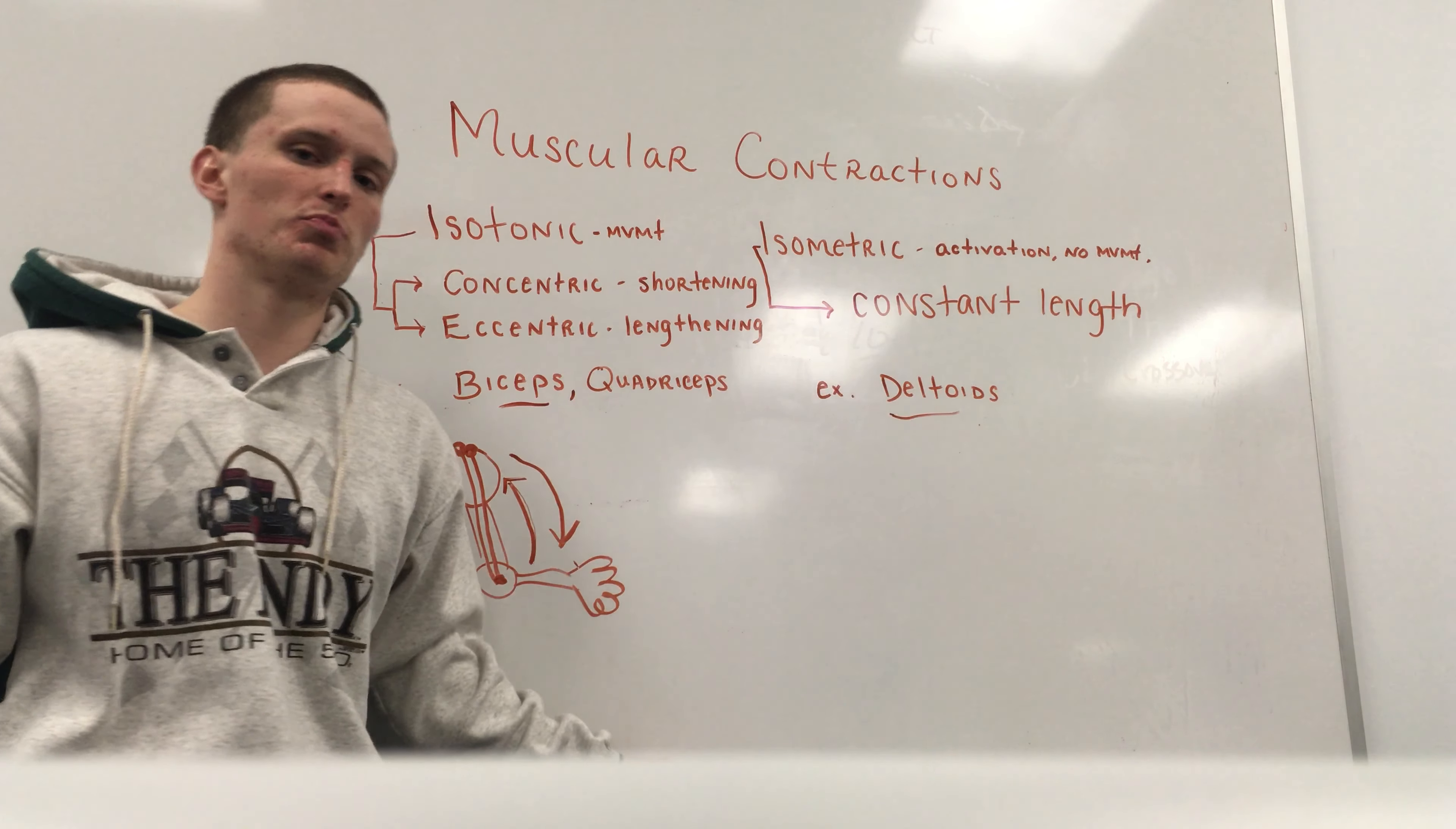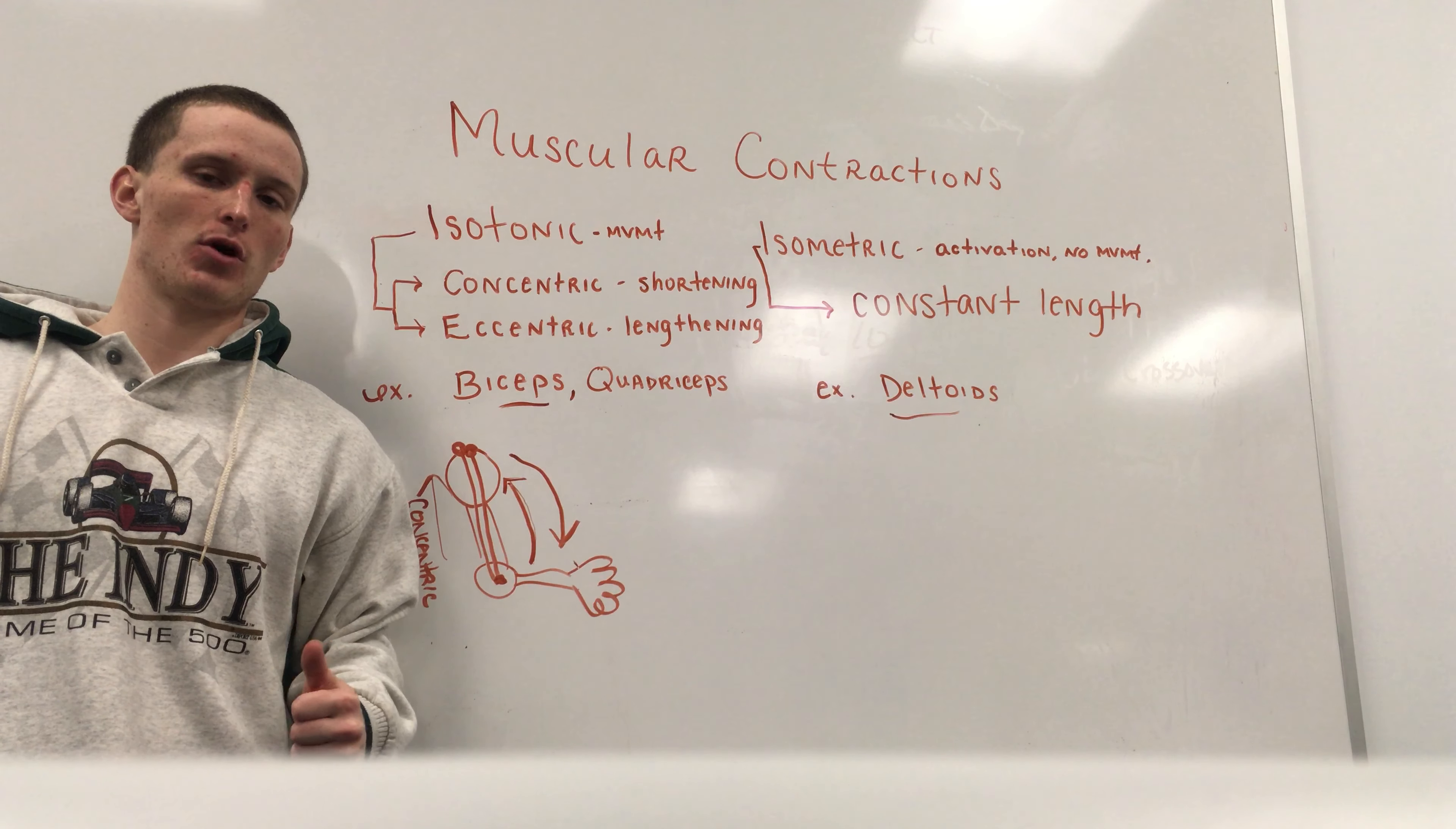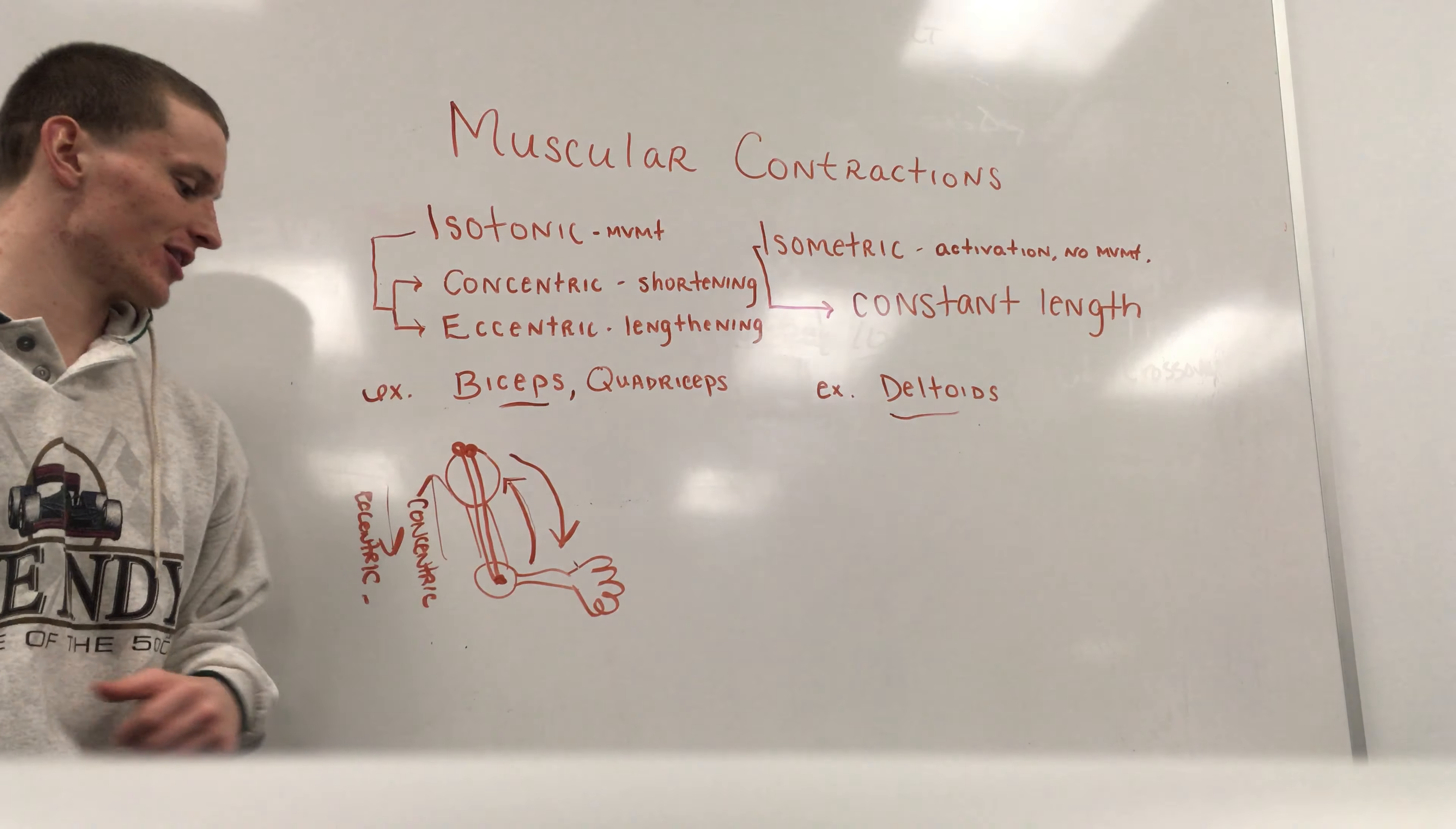So if I have a patient, post-op rotator cuff repair, and I am doing some isometrics with them, some deltoid isometrics, put a ball behind their elbow, put it against the wall, and I am going to have them push that elbow back into the wall. There is activation of that muscle. You can feel that muscle activate, but there is no actual difference in the length. There is no movement going on at that joint, because it is an isometric contraction.